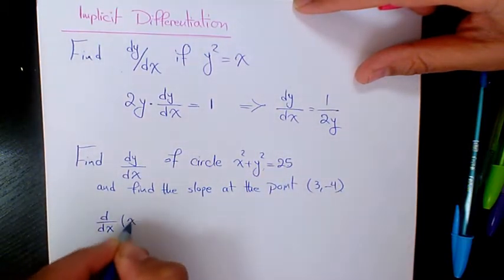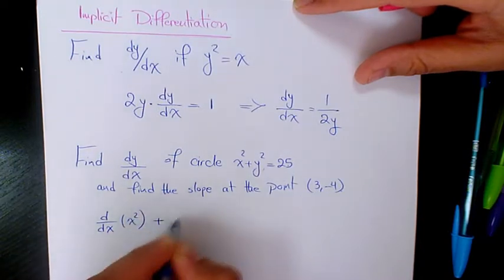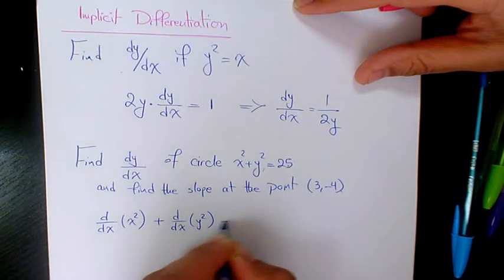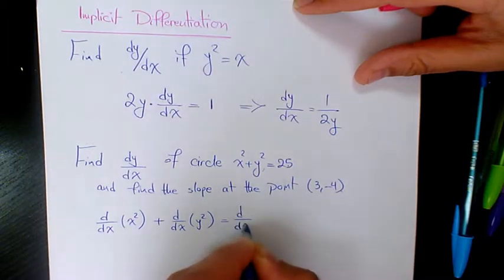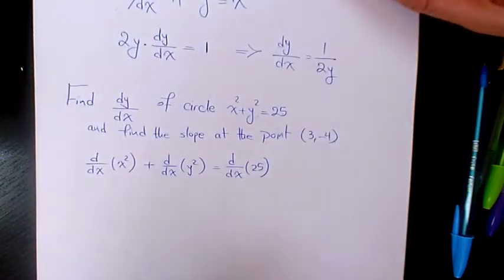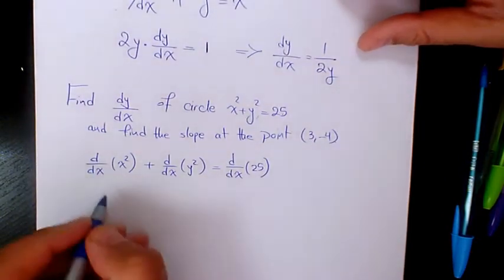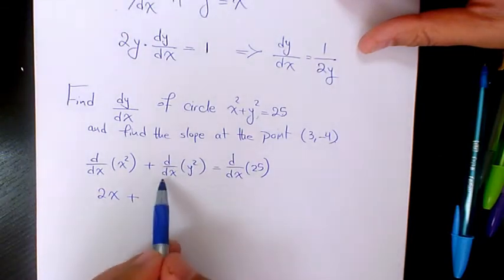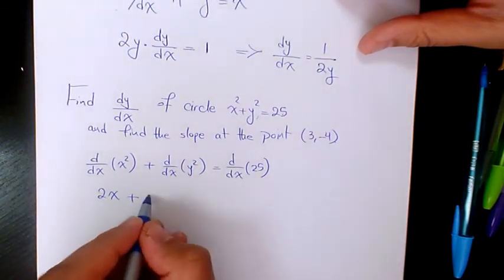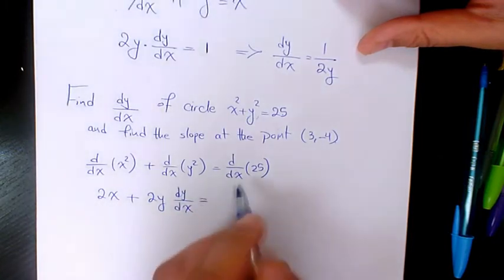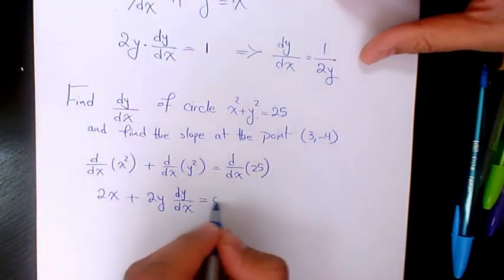We take the derivative of x² with respect to x, plus the derivative of y² with respect to x, equals the derivative of 25 with respect to x. The derivative of x² is 2x, the derivative of y² with respect to x is 2y dy/dx, and the derivative of 25 with respect to x is 0.